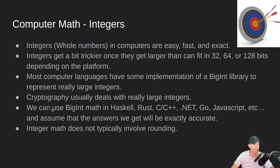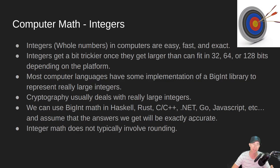We can use various big integer math libraries in Haskell, Rust, C++, .NET, Go, JavaScript, etc. We can assume that all those answers are going to be exactly accurate because integer math is exact — it typically does not involve any rounding. But that's not what we're talking about today.